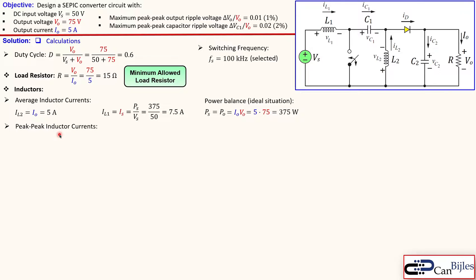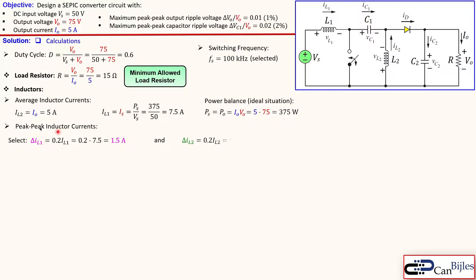Now we need to select the peak-to-peak ripple current in the inductors. I will select 20% for L1, so 20% of the average current of 7.5 amps gives 1.5 amps peak-to-peak. This is a design choice — you can also go for 10% or 15% depending on how much stress you can apply to your components. Similarly for L2, 20% of 5 amps gives exactly 1 amp peak-to-peak.